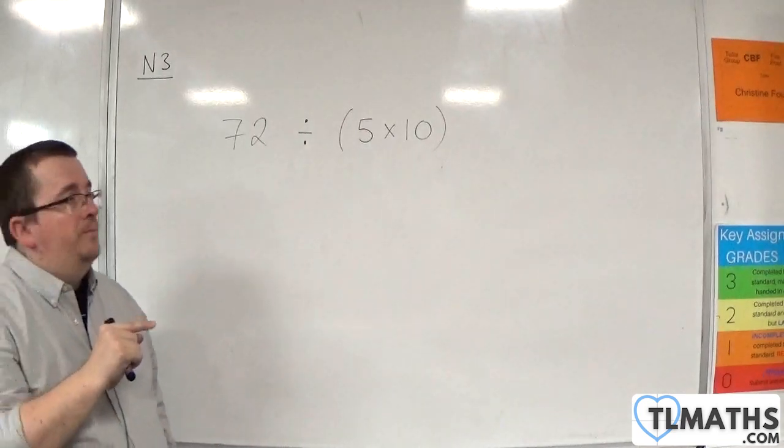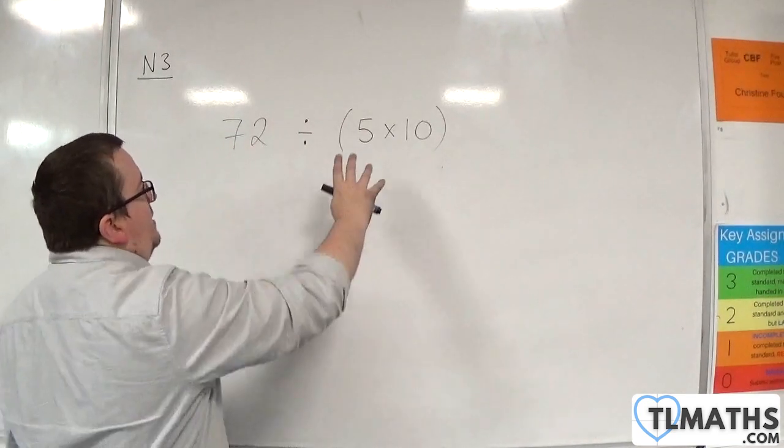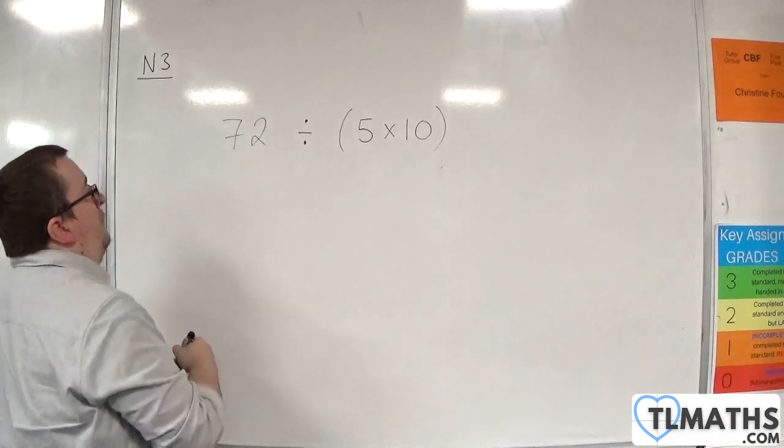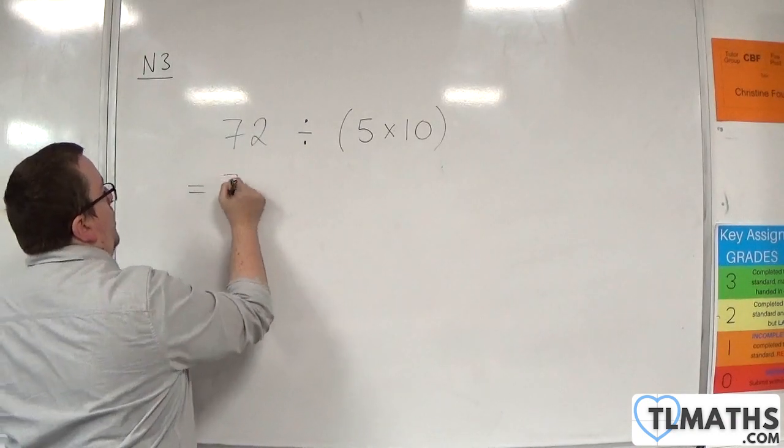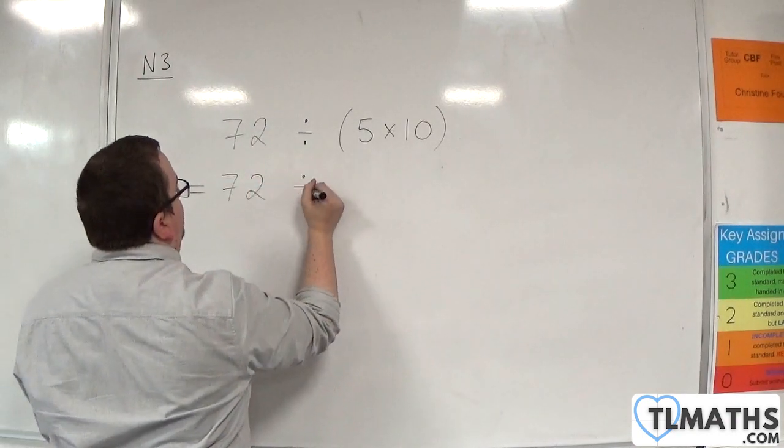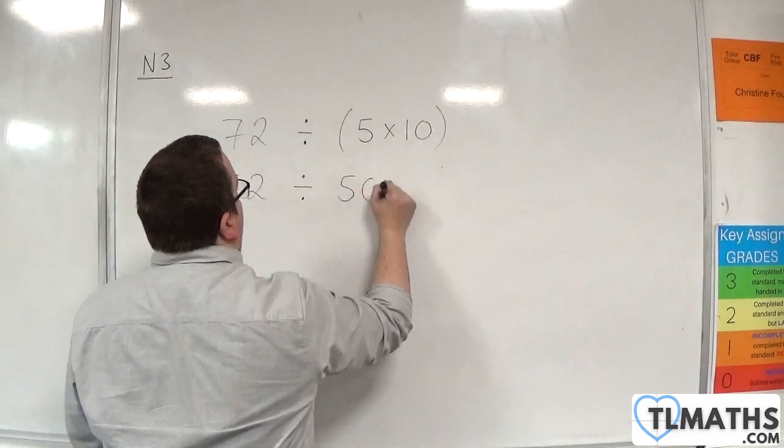So, I need to multiply 5 and 10 together first. So, it would be 72, and then divided by 50.